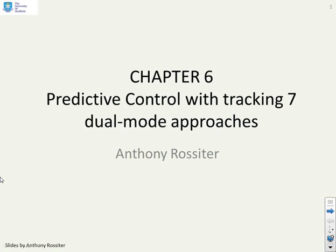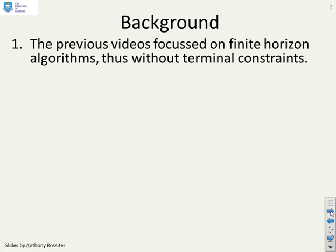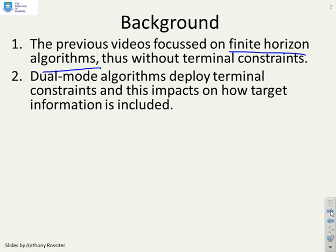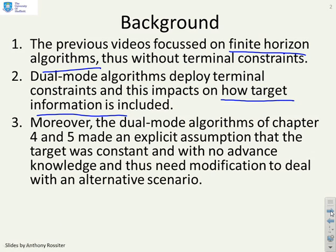This video goes through the algebra of how you apply advanced knowledge in a dual-mode approach. The previous videos in this chapter have generally focused on finite horizon algorithms without terminal constraints. But dual-mode algorithms deploy terminal constraints and this impacts on how target information can be included. The dual-mode algorithms of chapters 4 and 5 made an explicit assumption that the target was constant in the future and therefore used no advanced knowledge. So we need to modify the algebra available in those chapters to include advanced knowledge.